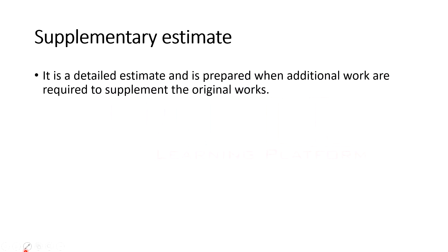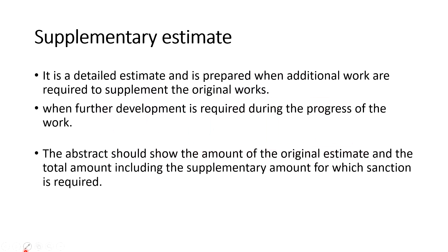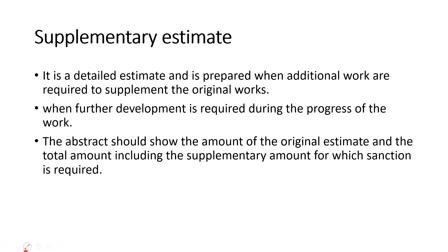A supplementary estimate is a detailed estimate prepared when additional work is required to supplement the original work, or when further development is required during the progress of work. The abstract should show the amount of the original estimate and the total amount including the supplementary amount for which sanction is required.